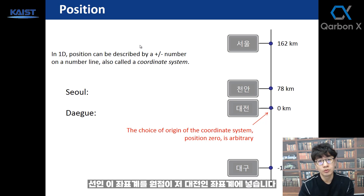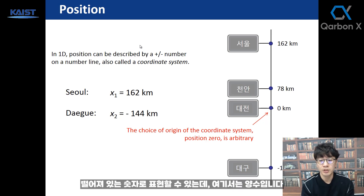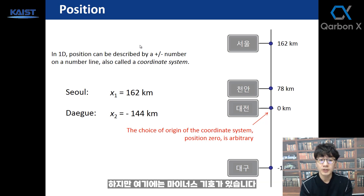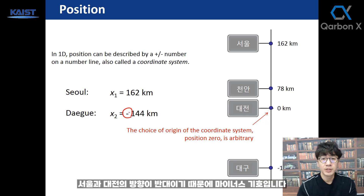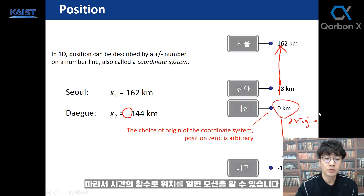Daejeon is used as the reference position — zero — and we put a coordinate system as a line from Daejeon to Seoul, where the origin is at Daejeon. Seoul is 140 kilometers away from Daejeon in the upper direction, which is a positive number. Daegu is located in the opposite direction, 144 kilometers from Daejeon, so it gets a minus sign because the direction is opposite compared to Seoul. Daejeon is the origin.